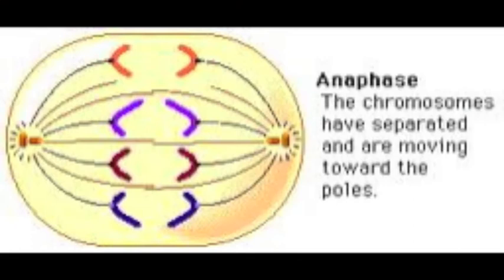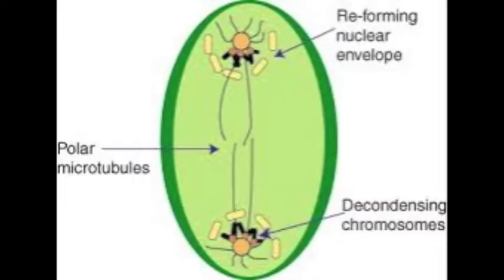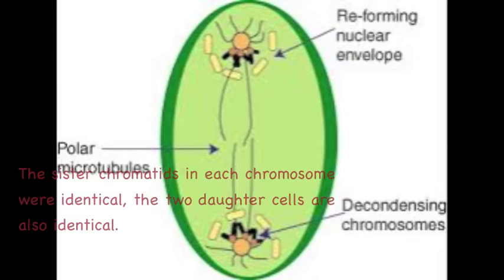But anaphase kind of trips me up. No worries. In anaphase, the two sister chromatids are pulled towards the poles by the spindle fibers. Once the chromatids split, they are now considered full chromosomes.